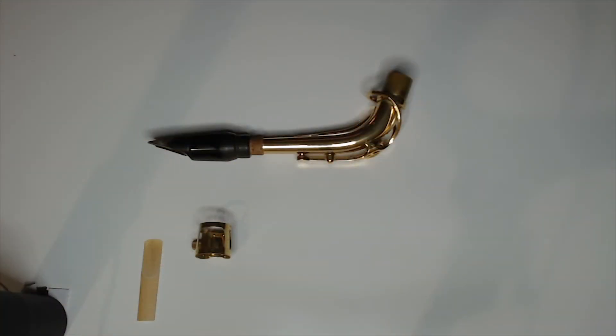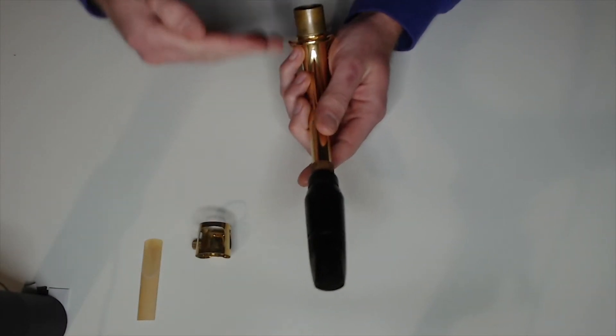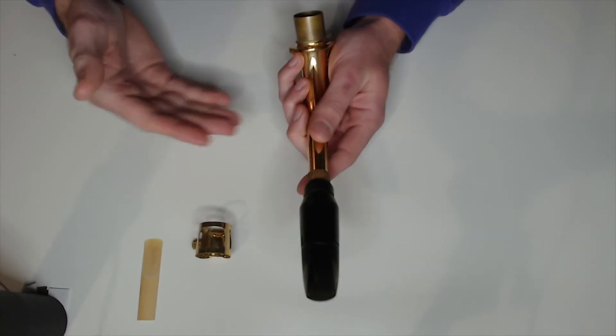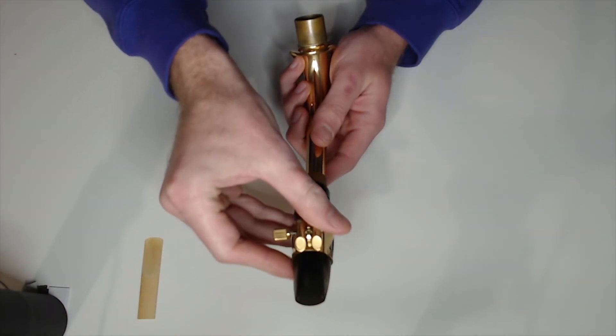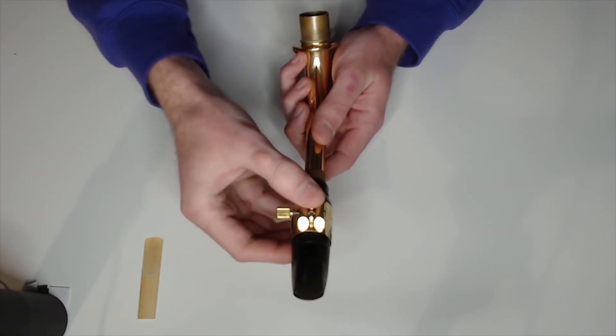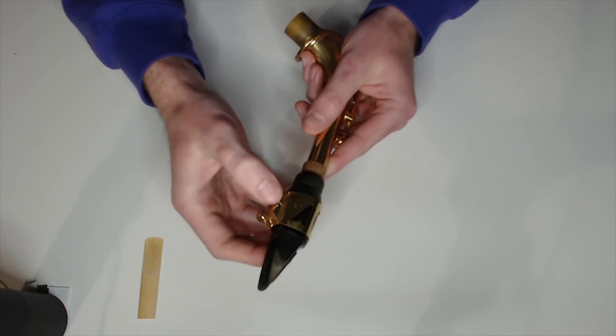For our next step, we need to put the ligature on the mouthpiece. I like to hold the neck in my non-dominant hand. Since I'm right-handed, I hold it in my left hand. Let's take our ligature and put it on the mouthpiece, making sure that it's a little bit loose. You can see that it sits lower than the mouthpiece line on this particular model.